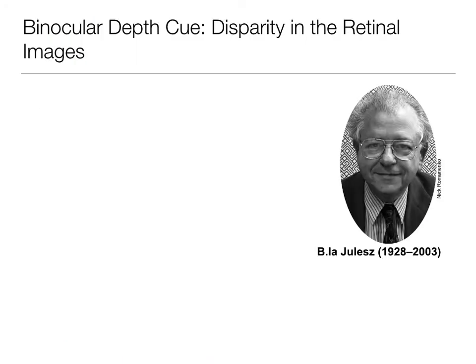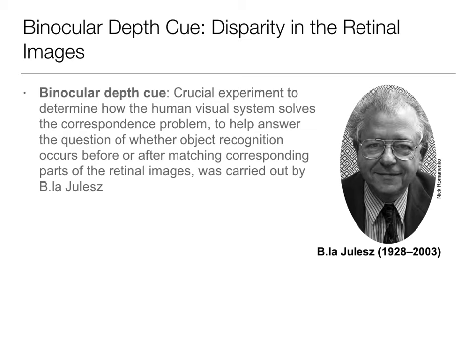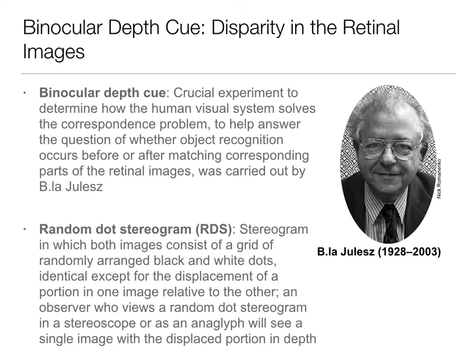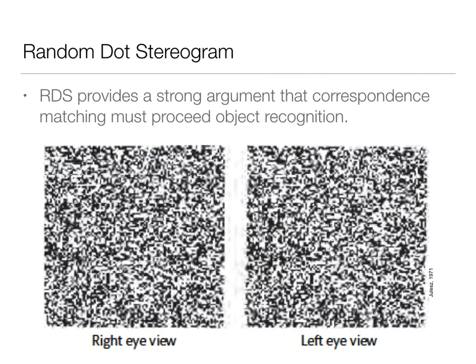So how we figured out the answer to these two different hypotheses — whether correspondence matching happens before or after object recognition — was done by Julesz, a Hungarian researcher doing research here in the United States. He did the crucial experiment to figure out how the visual system solves this correspondence problem: which one happens first — correspondence matching then object recognition, or object recognition then correspondence mapping. He did this using a stereogram, which is why I had to tell you what stereograms were first. And he did them with a random dot stereogram — a grid of randomly assigned dots, except there's a displacement in part of it, which allows us to see depth perception.